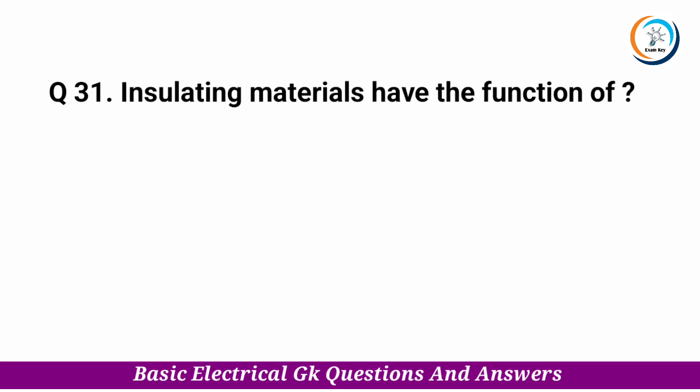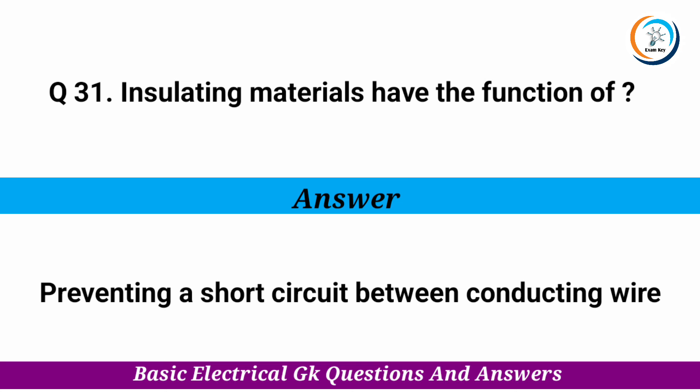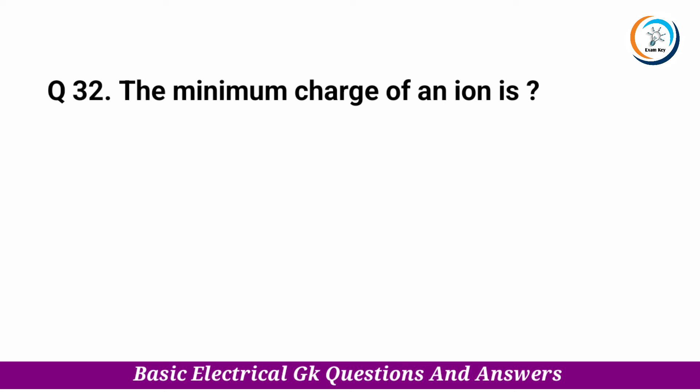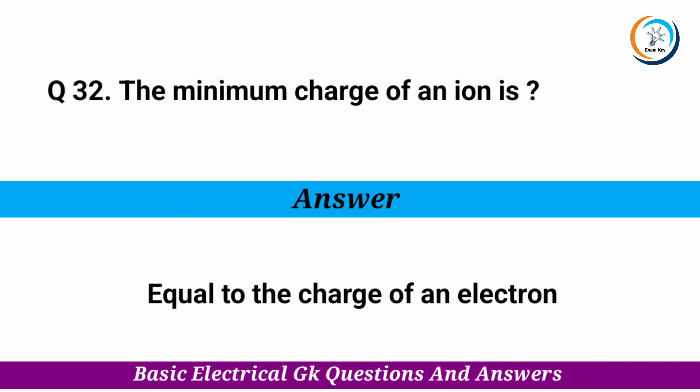Insulating materials have the function of — Answer: preventing a short circuit between conducting wires. The minimum charge of an ion is — Answer: equal to the charge of an electron.